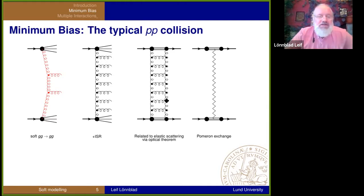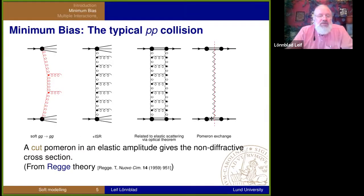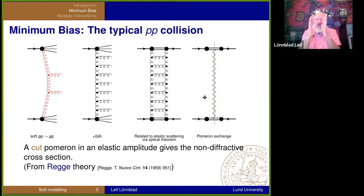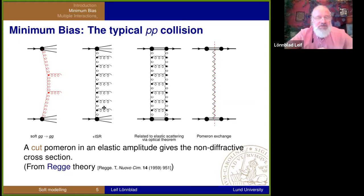The elastic scattering amplitude can be described in terms of the exchange of a pomeron. When we have a diffractive or non-diffractive event, we say that we cut the pomeron. If you think of the pomeron as a semi-bound state between two gluons that interact by exchanging gluons, and we cut it, we get a non-diffractive, low-PT event. Even though this was the theory of scattering in the 50s and 60s, before we knew about partons and gluons, it's still quite useful for very soft interactions.